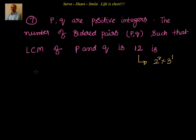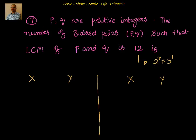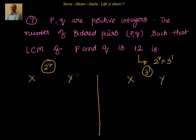Let's say we consider two numbers X and Y such that their LCM equals 12. I will divide the problem into two parts: in one part I'll see how to distribute 2² and on the other side how to distribute 3¹. If I get the combinations from both parts and multiply them, I get the total number of ordered pairs.